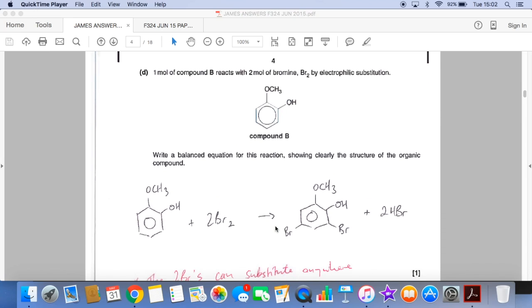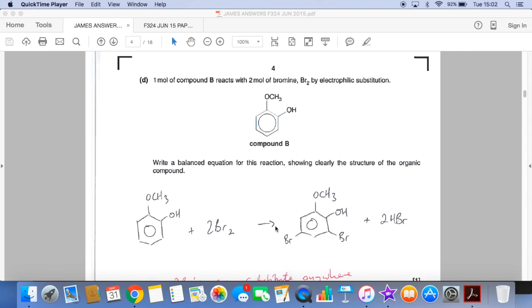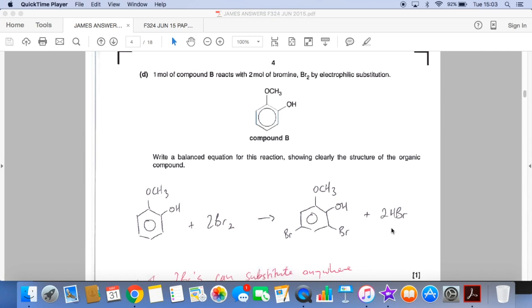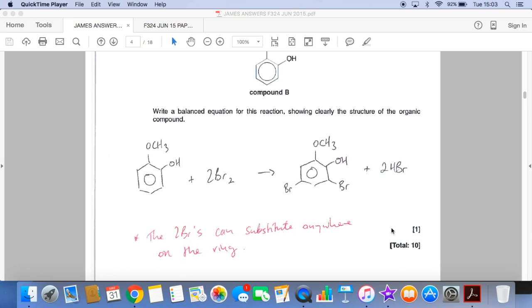And then the last part of the question, we've got to react one mole of compound B with two moles of bromine and it's got to be by electrophilic substitution. So we've got to take an H off the benzene ring and replace it, substitute with a Br. So we're going to form each time a mole of HBr. And so I've put the two Br's there and there's my two moles of HBr that would form. And I've written a note there, this is from the mark scheme, the two Br's can substitute anywhere on the ring.